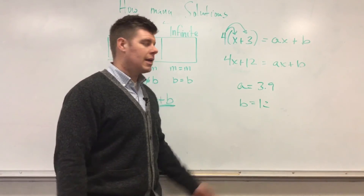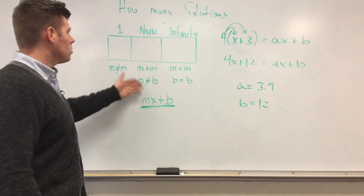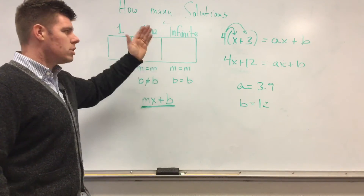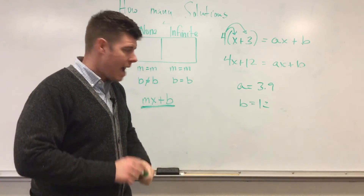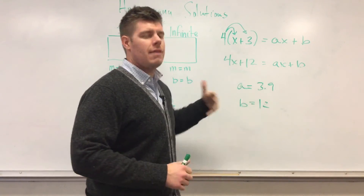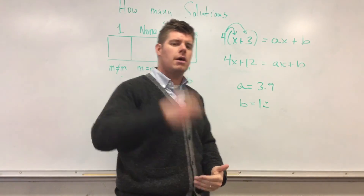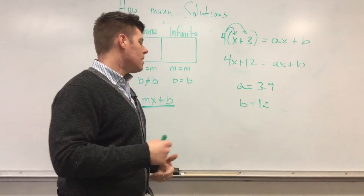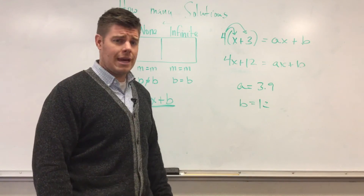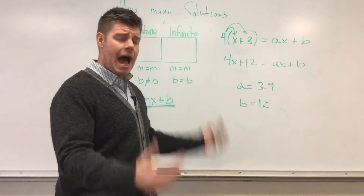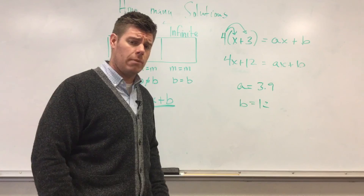If I want one solution, B can be anything — even 12 — but a cannot be 4. It can be any number besides 4: 4.1, negative 300, 3.9 — it doesn't matter, as long as it is not 4. This is working backwards: given an equation, you create the numbers to make it no solution, infinitely many, or one solution. Those are the only questions that can be asked at this level.